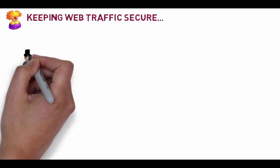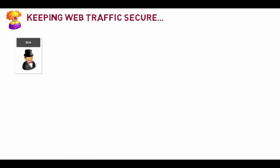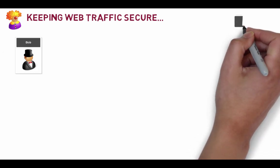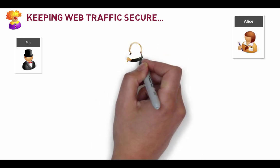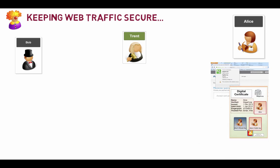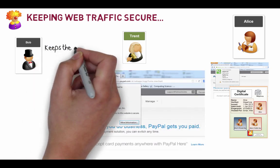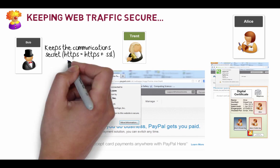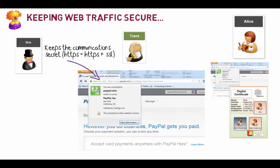Let's look at an example with secure web traffic. Bob connects to a web server — Alice in this case — and Trent is trusted by both to prove identity. The site has a public key and private key. When Bob logs on, for example to PayPal, we see a little green box and HTTPS. HTTPS means we're creating a tunnel between us and the destination — it happens when we use Google too, automatically creating an HTTPS connection to keep things secure.